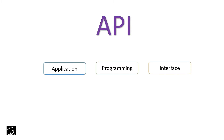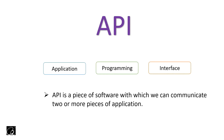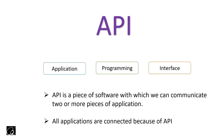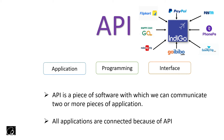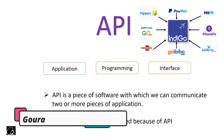API is nothing but Application Programming Interface - it is a piece of software with which you can communicate two or more pieces of application. Because of API, all kinds of applications today are connected, and we can integrate multiple features into an application. For example, because of API you can book your flight for an airline not from their official website but using different platforms like PhonePe, Paytm, and so on.